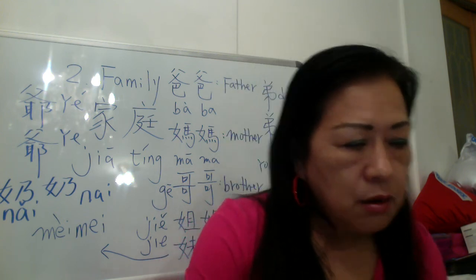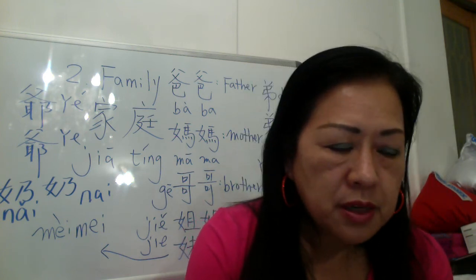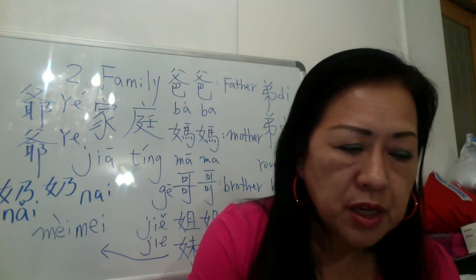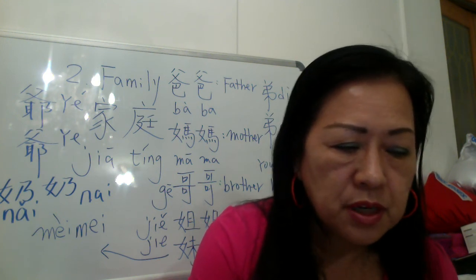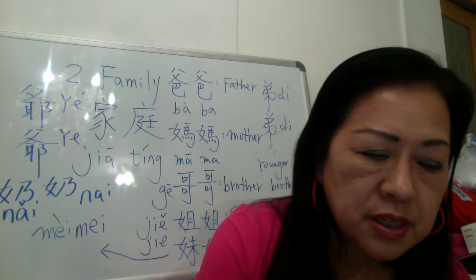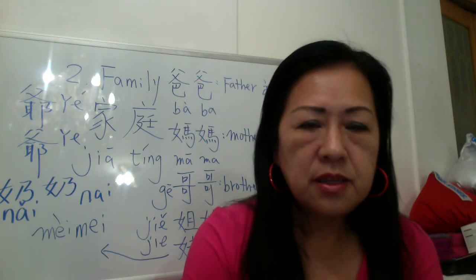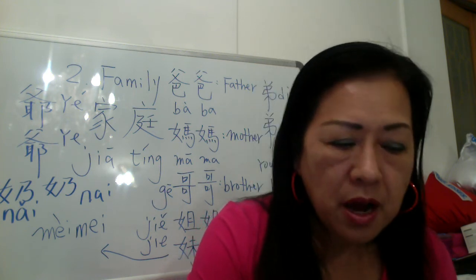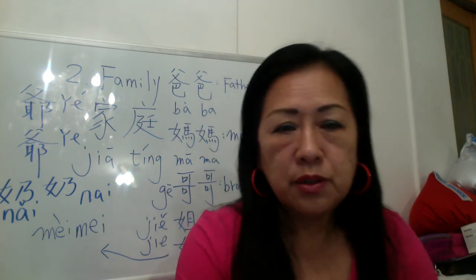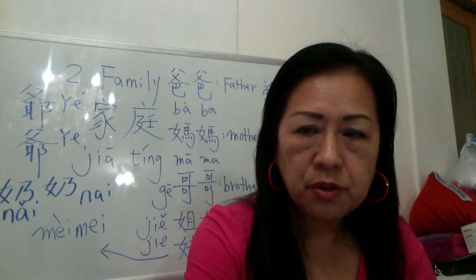Page 45 — 我们讲到 的. 的 indicates the possessive relationship. The particle 的 appears between the possessor and the possessed: 老师的名字, 我的姐姐, 我的爸爸, 王鹏的妈妈. This particle 的 is used a lot.